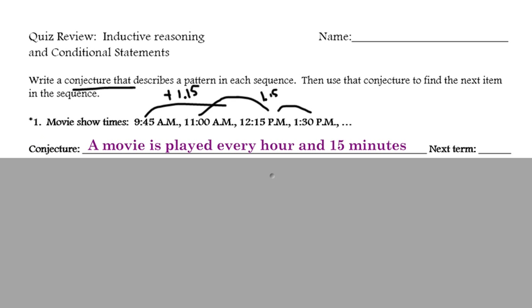And once you have your conjecture, just to find the next term in the series, in the sequence, a movie is played every hour and 15 minutes. So, an hour and 15 minutes past our last term would be adding an hour, which would make it 2 o'clock, and 15 minutes, which would be 45. So, an hour and 15 minutes later is 2:45 PM.